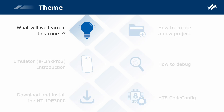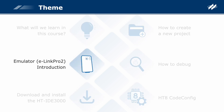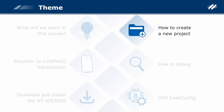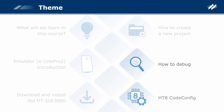What will we learn in this course? The topics are: Emulator E-Link Pro 2 Introduction, Download and Install the HT-IDE 3000, How to Create a New Project, How to Debug, and HT8 CodeConfig.